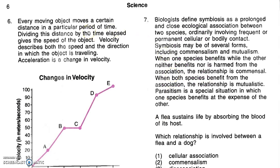Let's go to the next question. Question number six. Every moving object moves a certain distance in a particular period of time. Dividing this distance by the time elapsed gives the speed of an object. Velocity describes both the speed and the direction in which the object is traveling. Acceleration is a change in velocity.